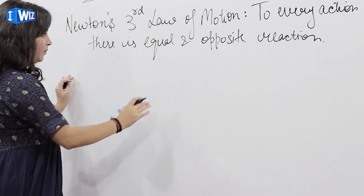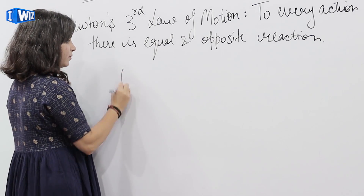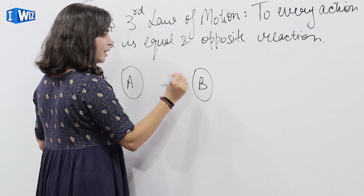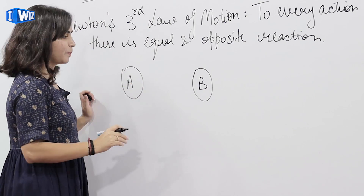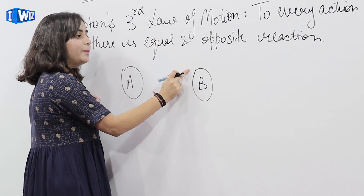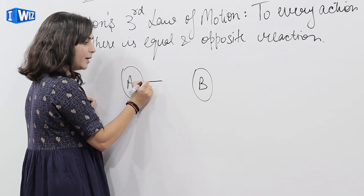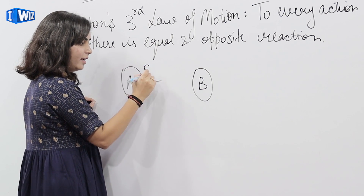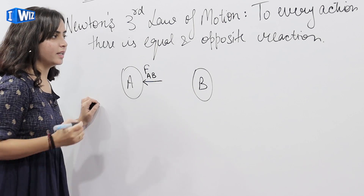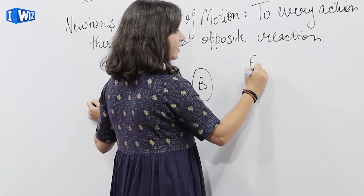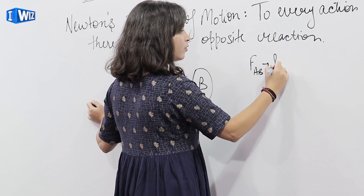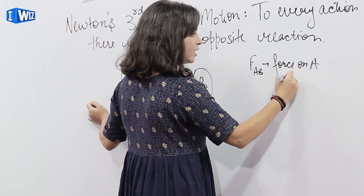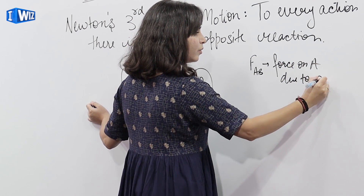For example, मेरे पास दो bodies हैं - body A and body B. जो body B है वो body A पर force exert कर रही है. Here, force on body A due to B — FAB is the force on A due to B.